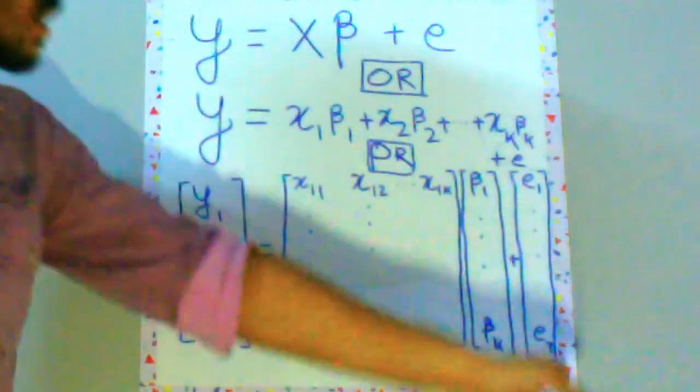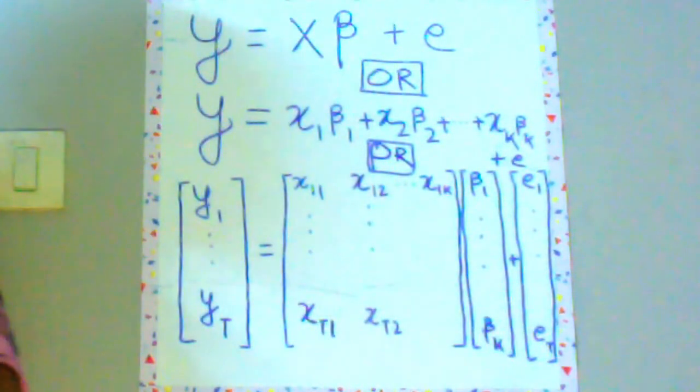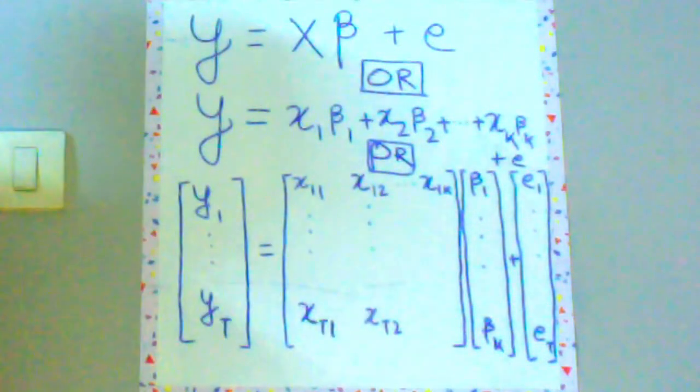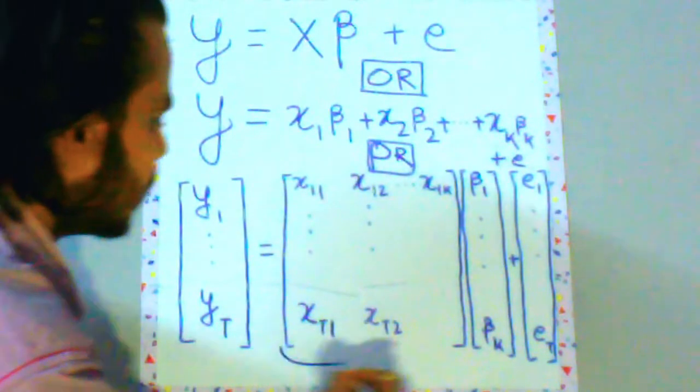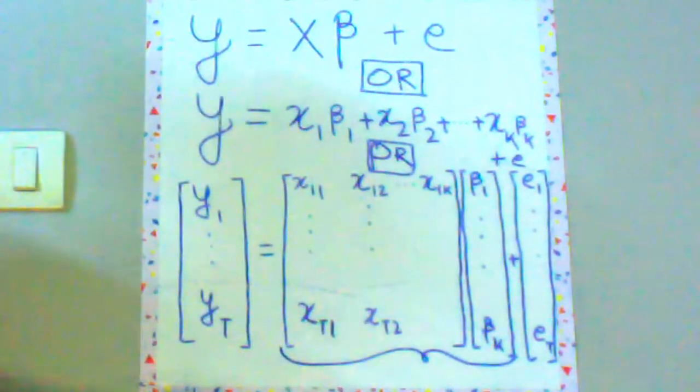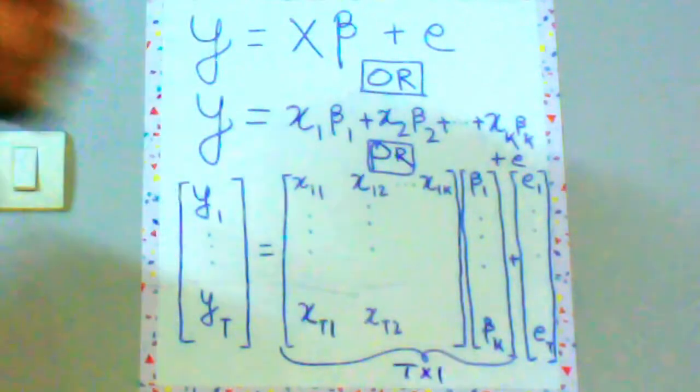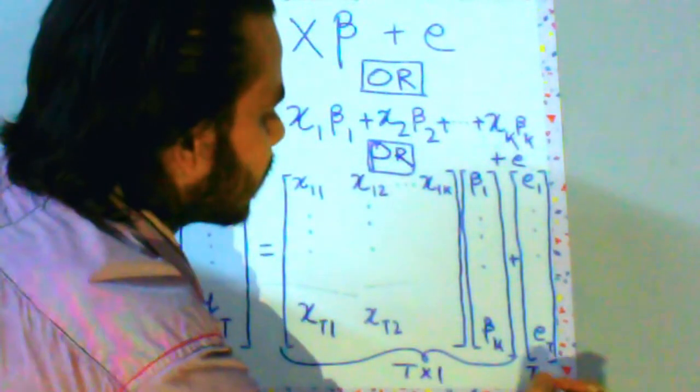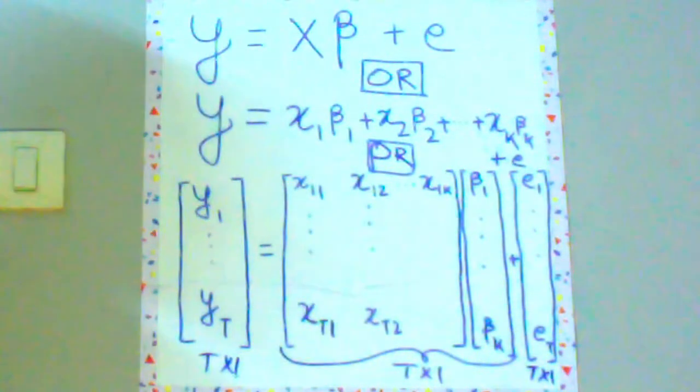And this is simply your error vector which goes from e1 till et because you have t y values. As if you multiply these two matrices, you will have a t cross 1 dimension of a matrix as this is t cross 1 and this error is also t cross 1 matrix.